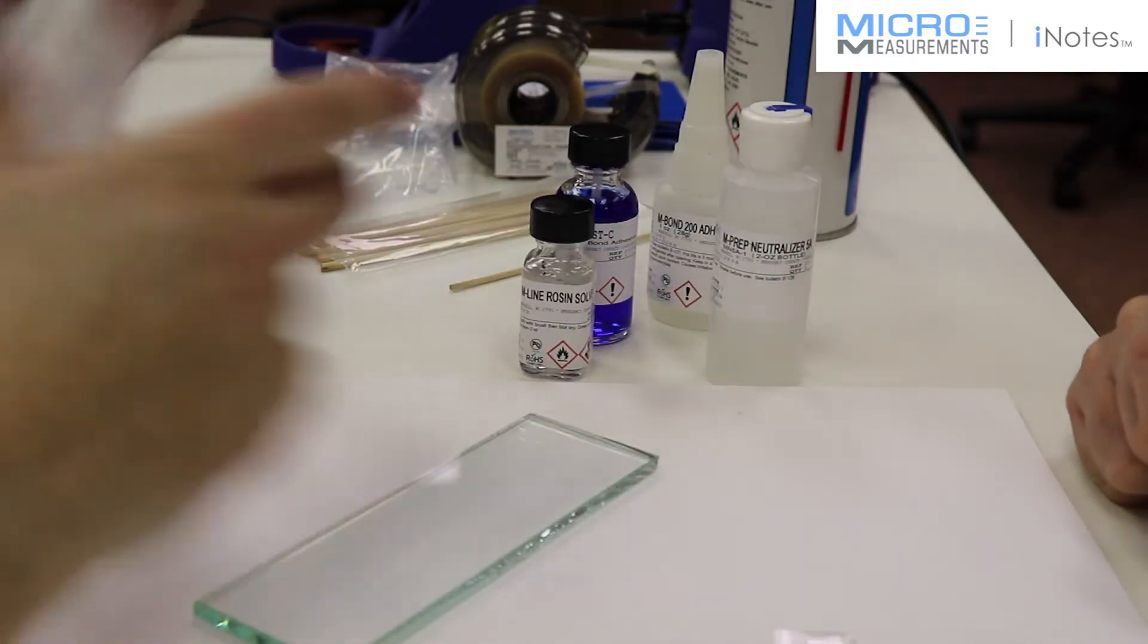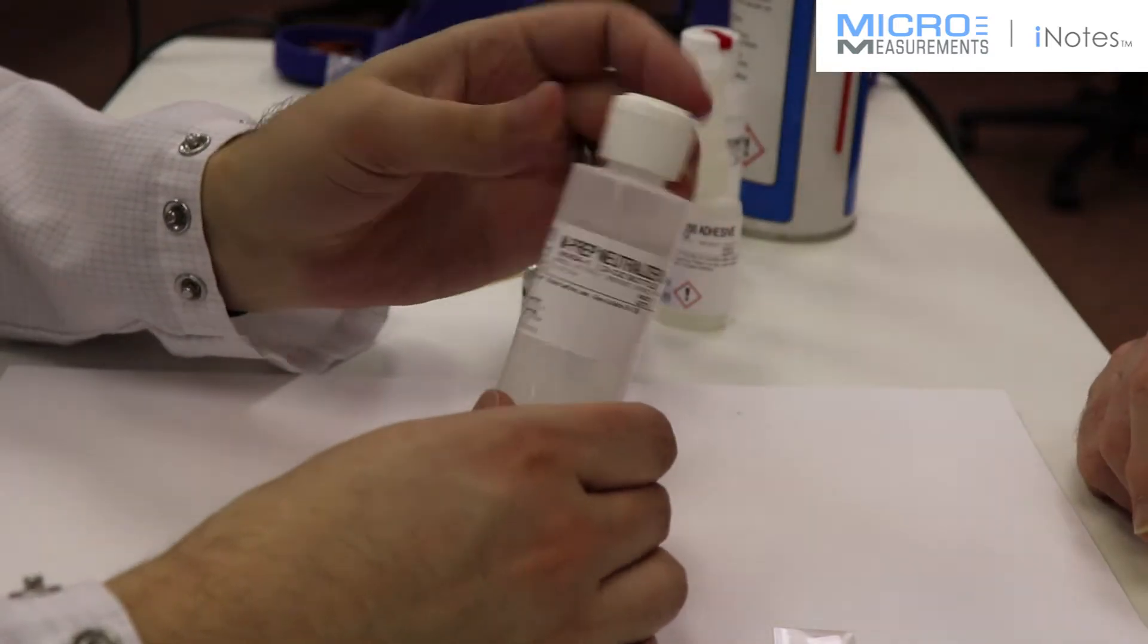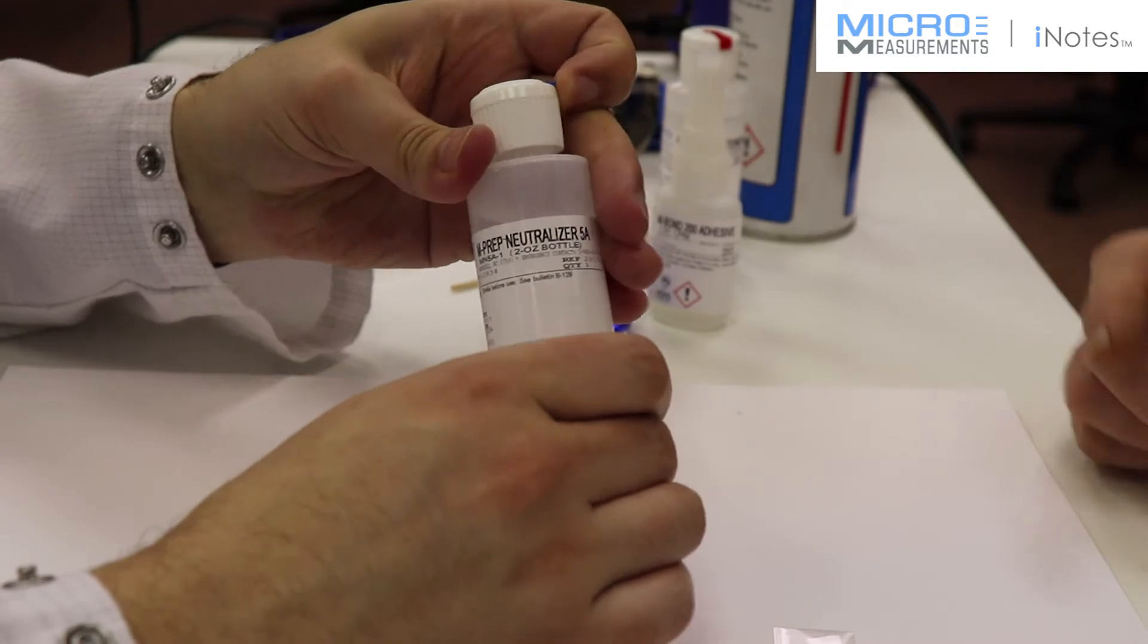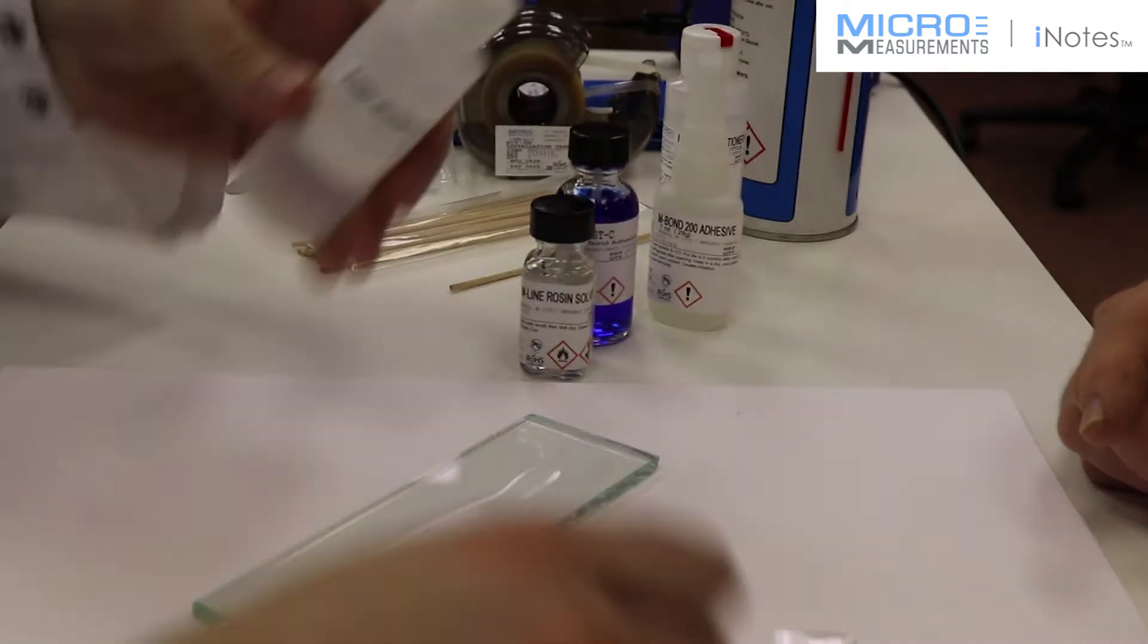Having completed the step with the Conditioner A, he's now going to locate the Neutralizer 5A, the blue tip bottle. And this is going to do two things. It has a little bit of a mild detergent in it, and it's also going to set the pH to either a neutral or slightly basic.